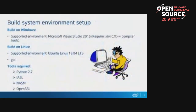The tools required to generate a Slim Bootloader binary are Python, IASL to generate ACPI images, NASM to compile the assembly code, and lastly OpenSSL.